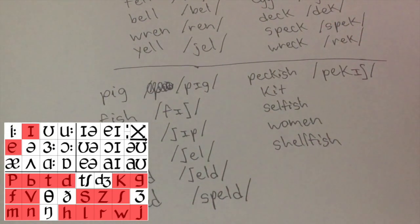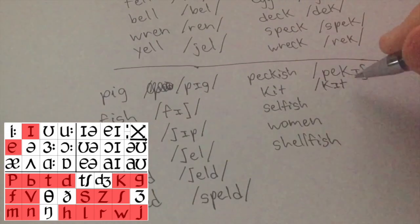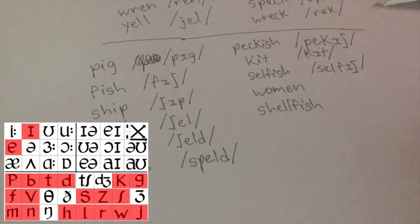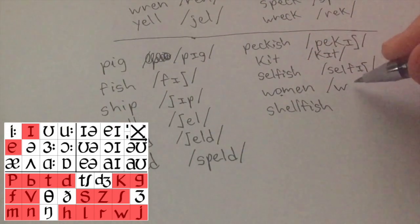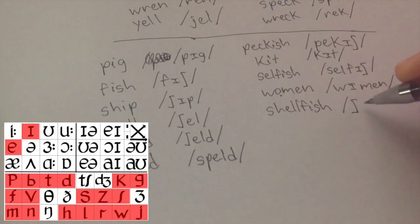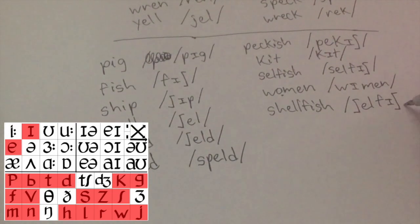I hope you're pausing this and going through it on your own and thinking through each one first instead of just watching me do it. Kit. Selfish. This one's tricky. Women. And then shellfish.